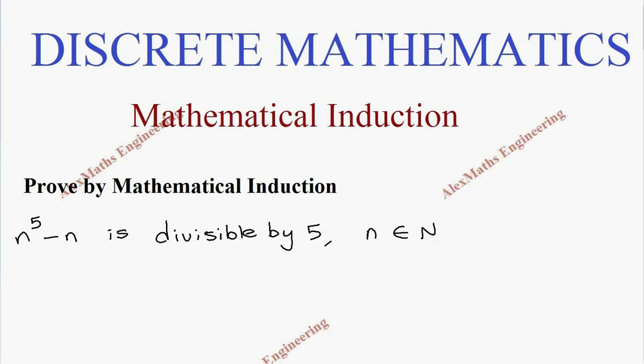Hi students, this is Alex. In this video we are going to prove by mathematical induction that n^5 minus n is divisible by 5, where n belongs to natural numbers. We take this as P(n).